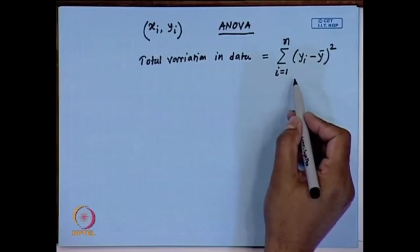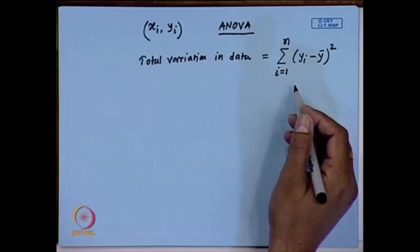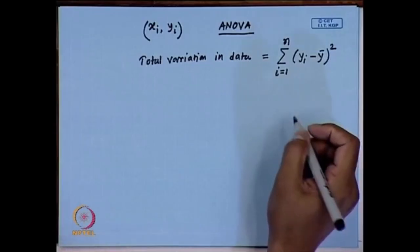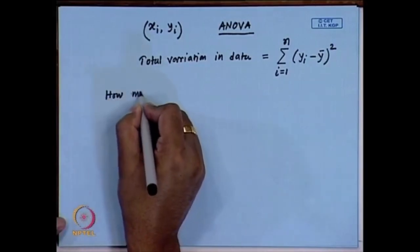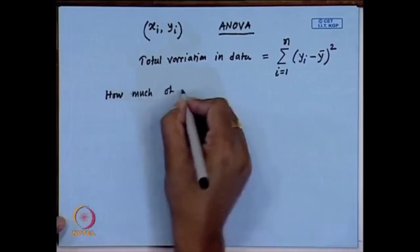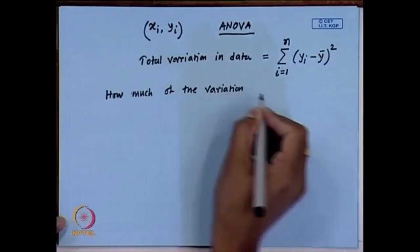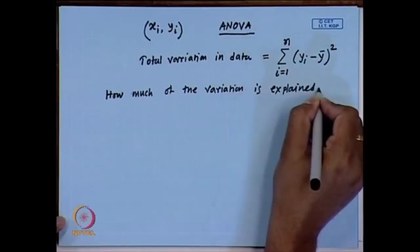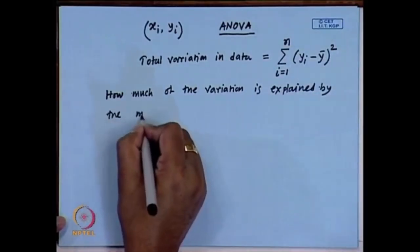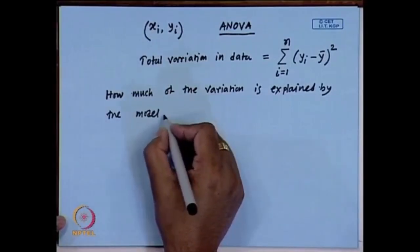Now the question is: how much of this variability is explained by the regressor variable, and how much of this variation is left unexplained? So the question is how much of this variation is explained by the model or the regressor variable.